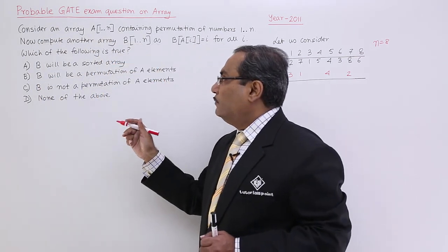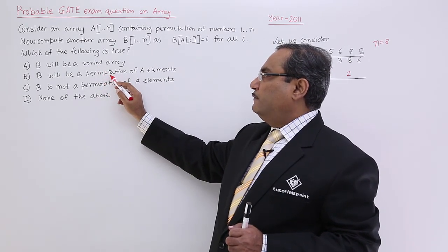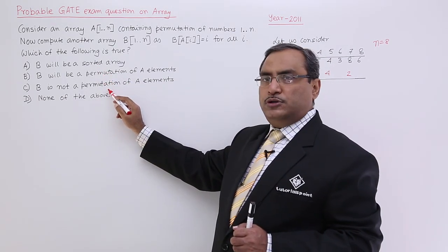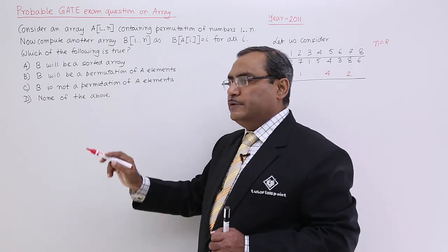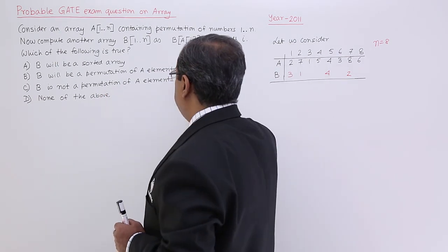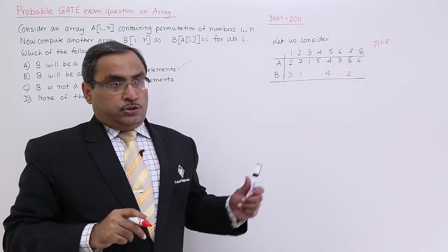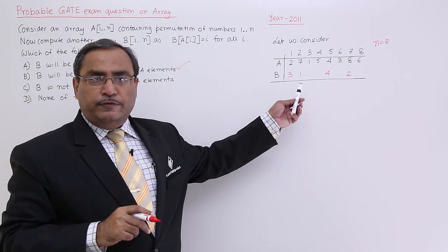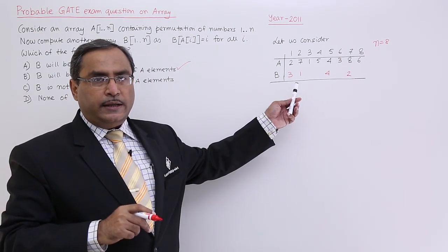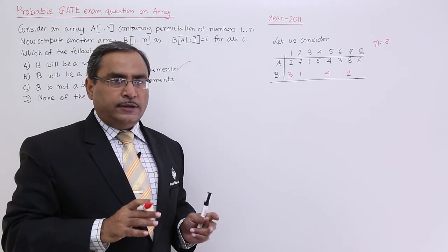I can easily confirm it is not sorted. It is a permutation of A elements. B is not a permutation of A elements is false and none of the above is also false. So, I shall be going for B. From here it is quite obvious that I am going to get a permutation of A elements in the B array. So, my answer will be B.